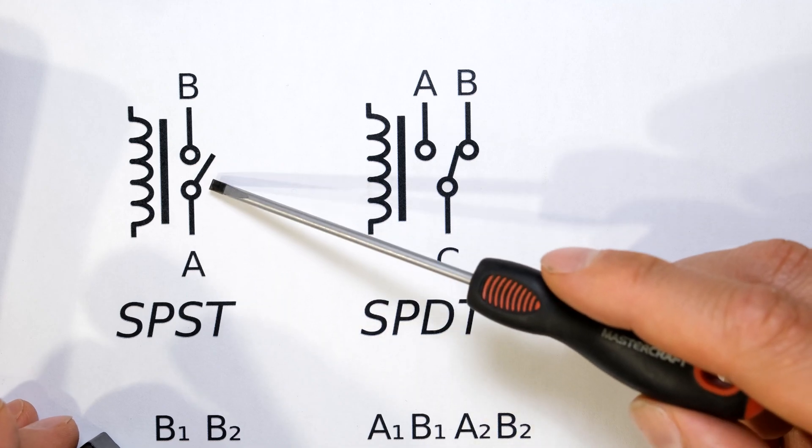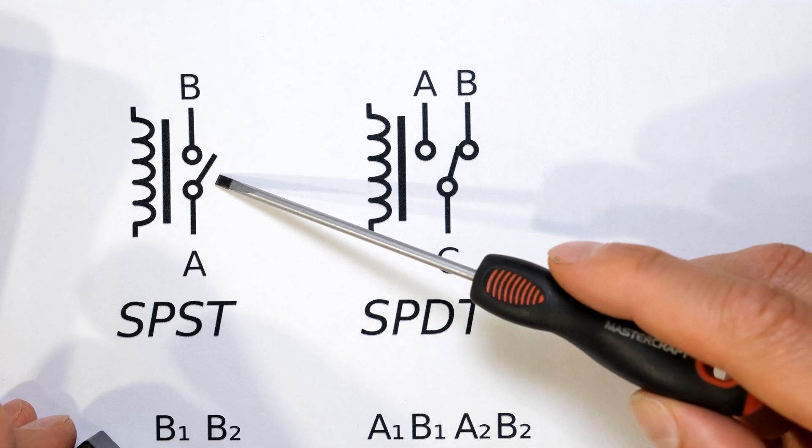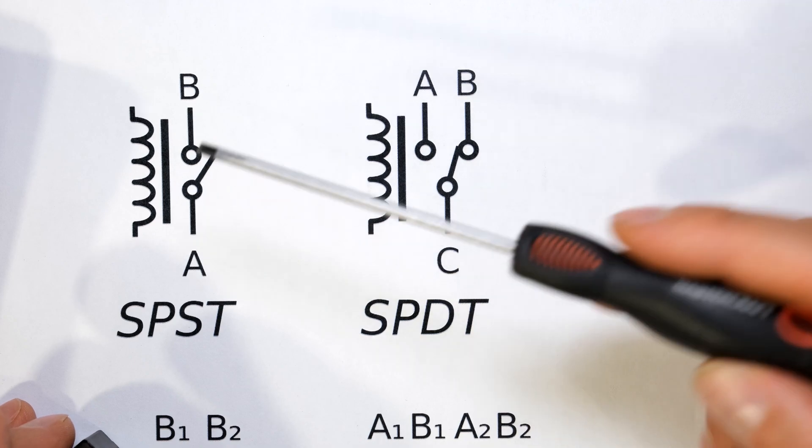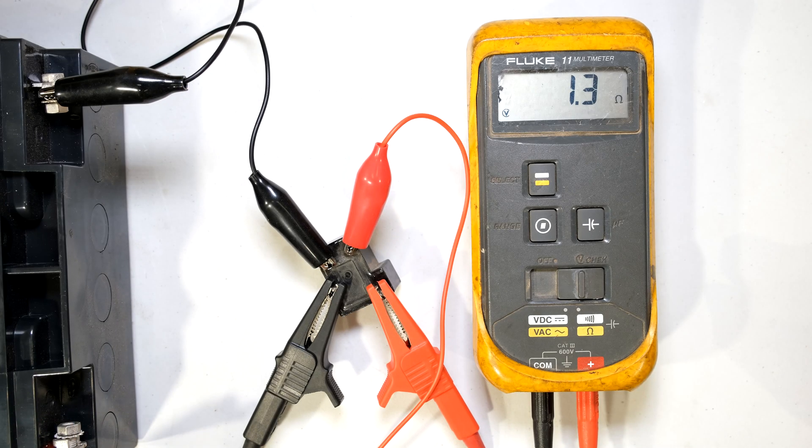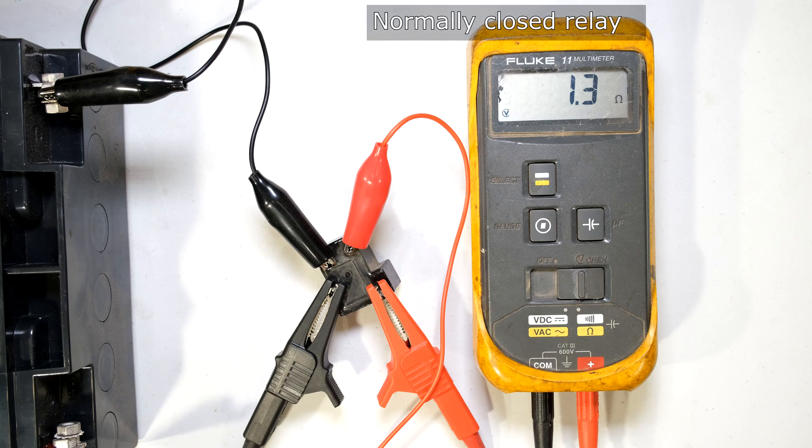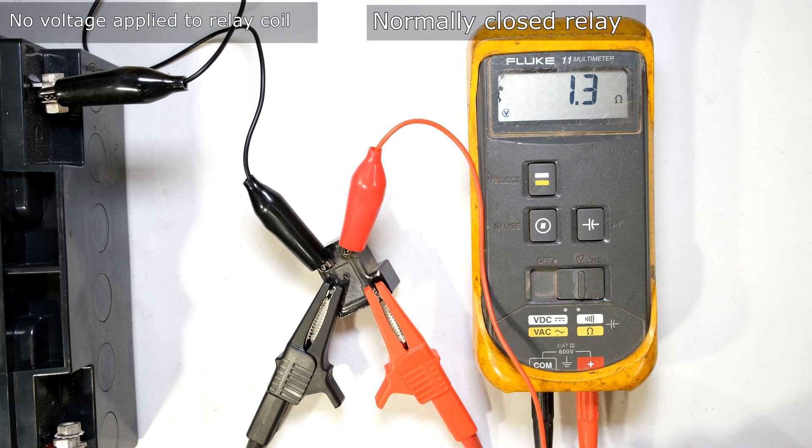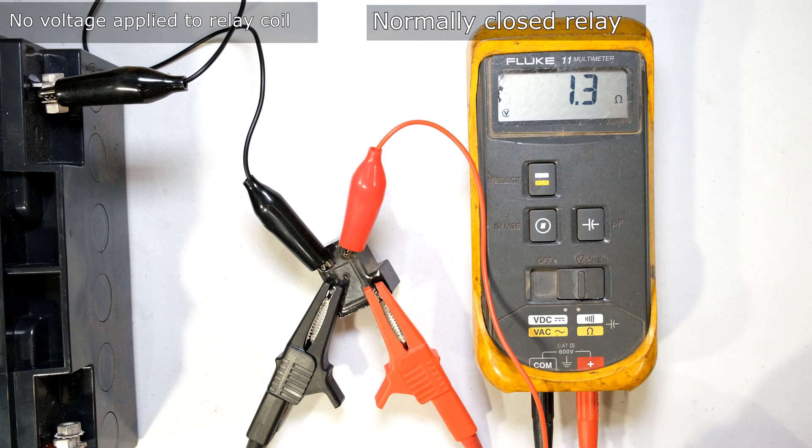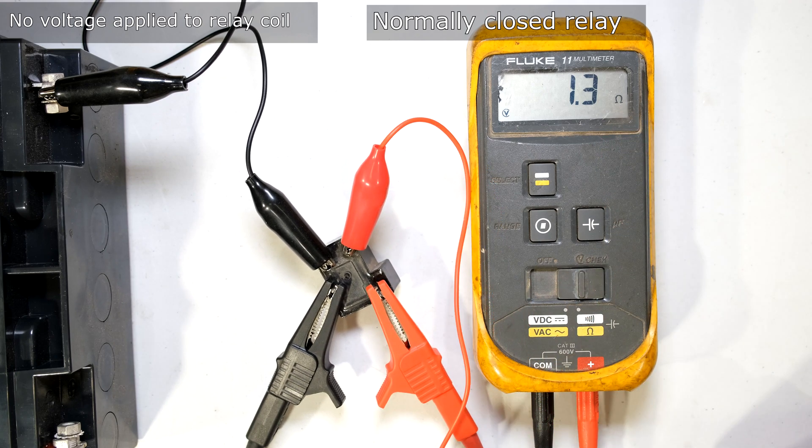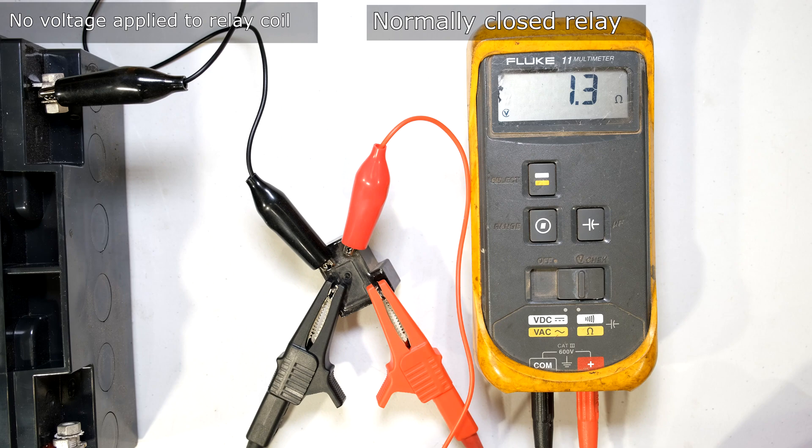If the relay is supposed to be normally open and you measured it and it was closed without being activated. That relay is faulty. And just to show you this particular relay is a normally closed relay. So here I have my meter on the contactor terminals. There you can see it's got a very low resistance. Telling me that that is a short circuit and it is a normally closed relay.